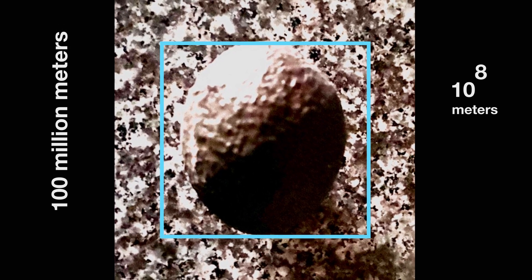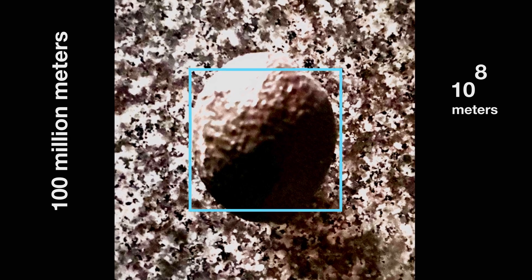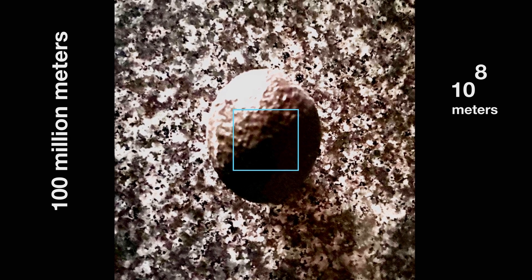Due to its rotation, earth bulges slightly at the equator, making it an oblate spheroid rather than a perfect sphere. This can be seen here.